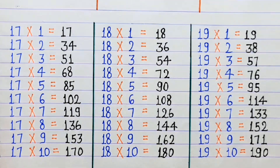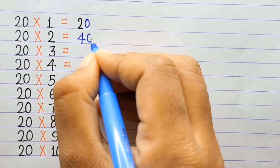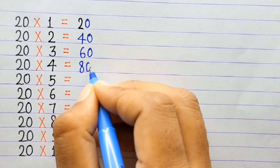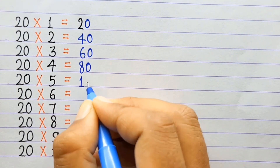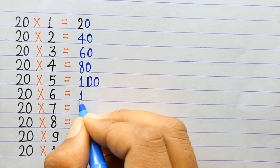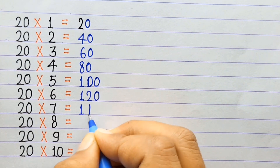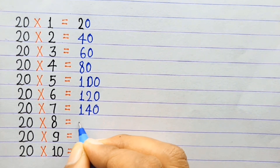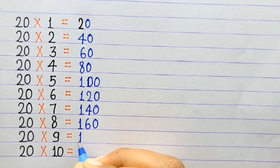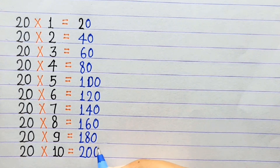20×1=20, 20×2=40, 20×3=60, 20×4=80, 20×5=100, 20×6=120, 20×7=140, 20×8=160, 20×9=180, 20×10=200.